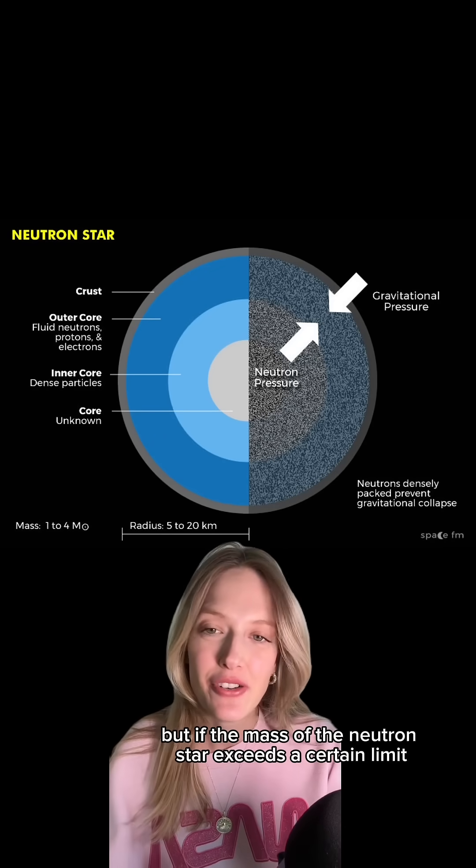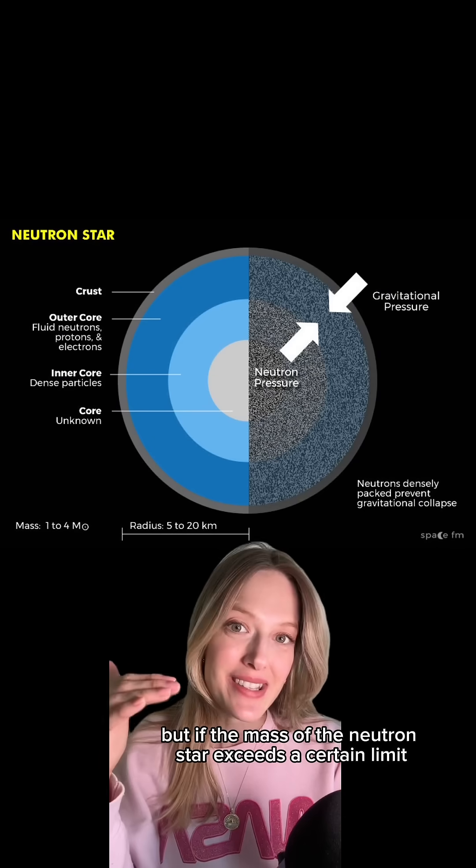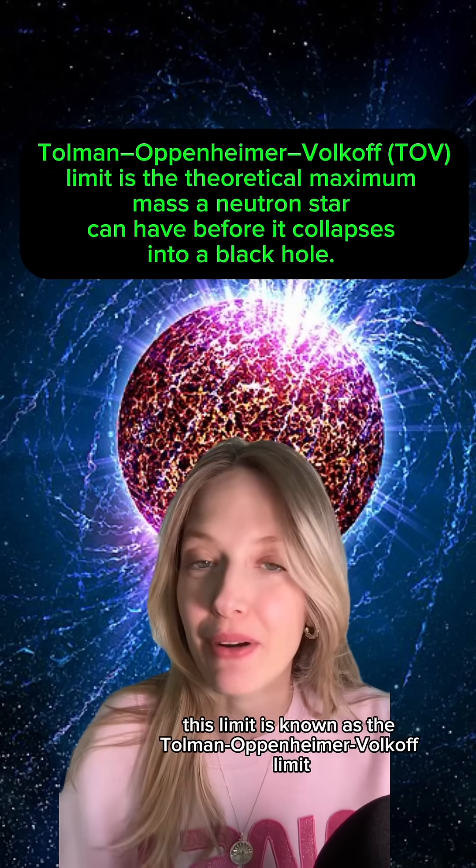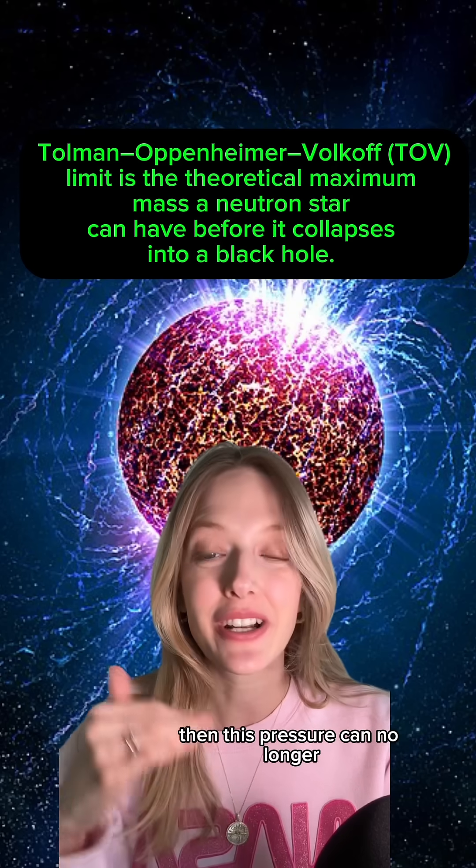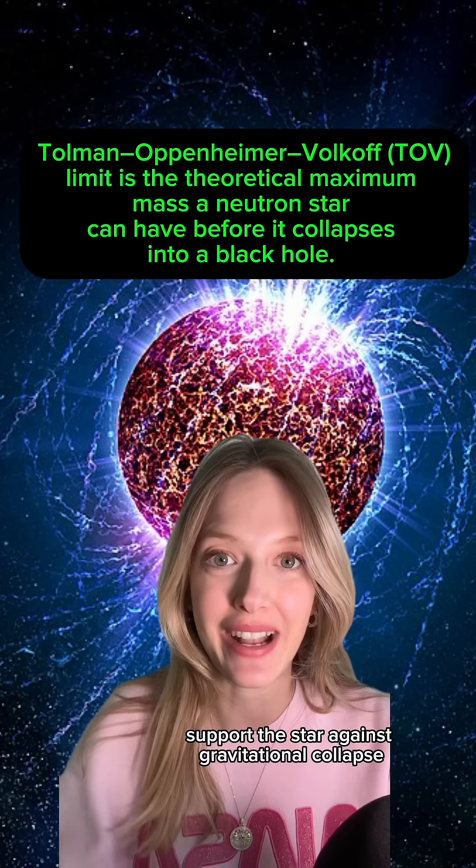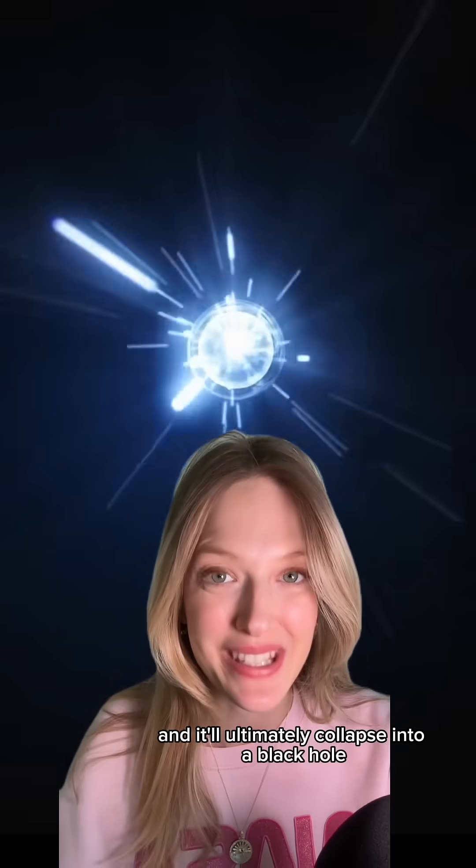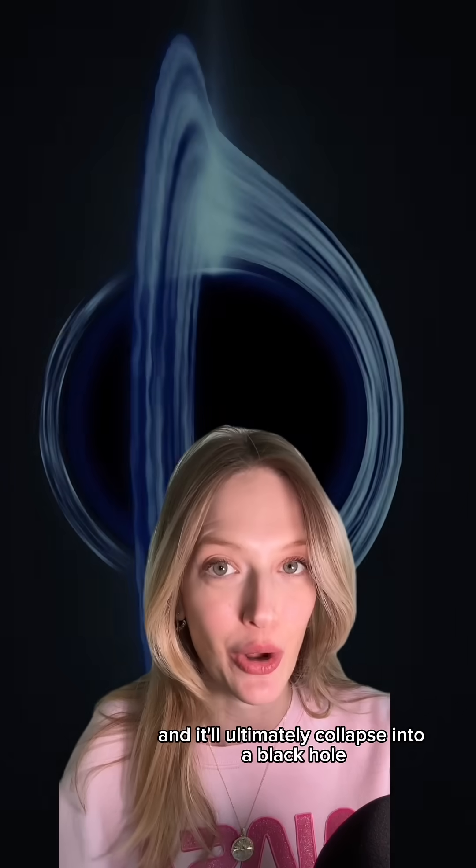But if the mass of the neutron star exceeds a certain limit, this limit is known as the Tolman-Oppenheimer-Volkoff limit, which is usually around two to three times the mass of the sun, then this pressure can no longer support the star against gravitational collapse.